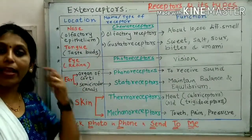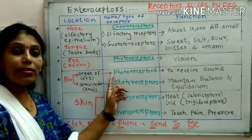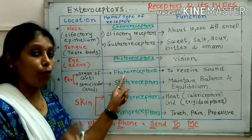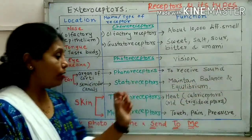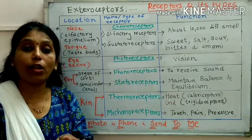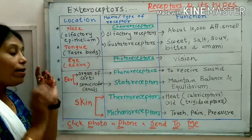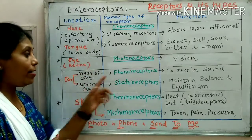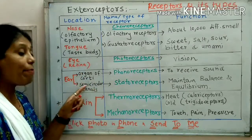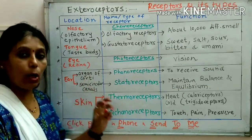Now come to ear. In case of ear, it is having two different receptors: one is phonoreceptor and the other is statoreceptor. Phonoreceptor means it receives the sound. Statoreceptor is responsible to maintain the balance or equilibrium — the liquid which is present inside the ear. The location for phonoreceptor is the organ of Corti, and for statoreceptor it is the semicircular canal, both parts of the ear.